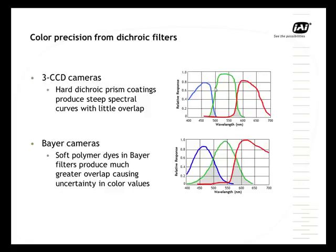Looking at the color filters in the cameras, a three-CCD camera has a hard dichroic prism coating, which gives a very steep roll-off. Bayer cameras use a soft polymer dye and have much more spectral overlap. For example, if we want to image green at 500 nanometers, on the three-CCD camera most of the green response is around 60% with almost no blue. On the Bayer camera at 500 nanometers, there are roughly equal amounts of green and blue, which makes it very difficult to achieve true and accurate color.